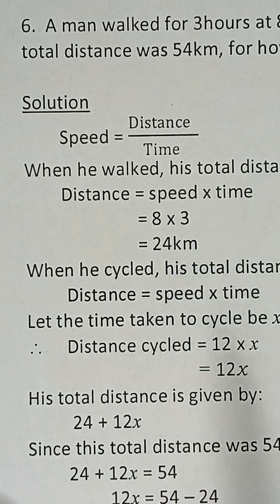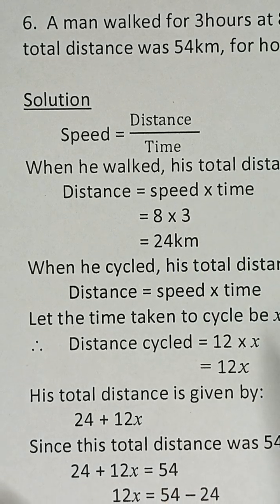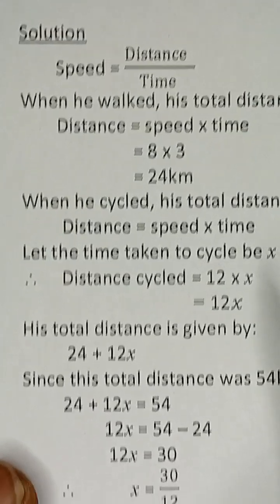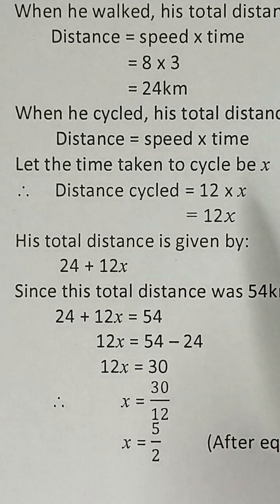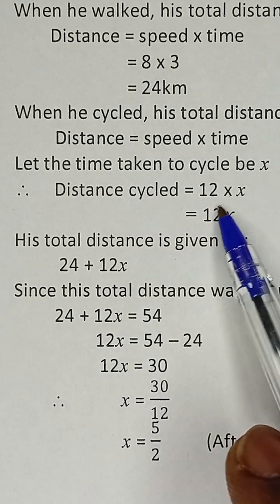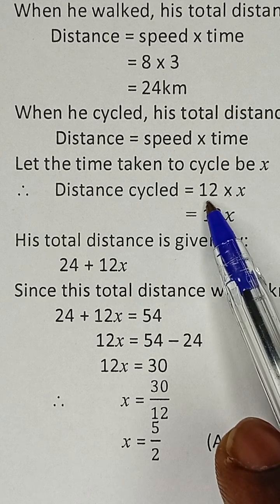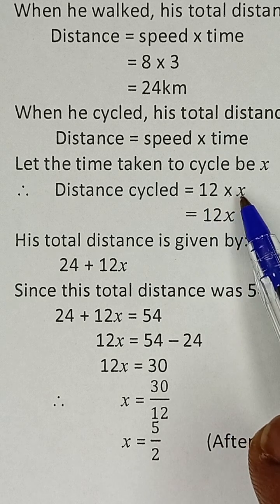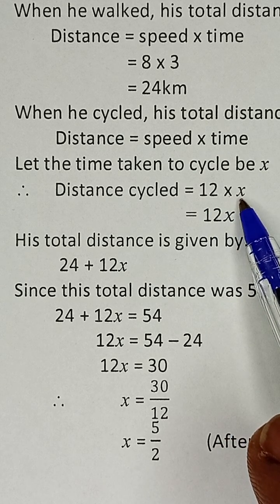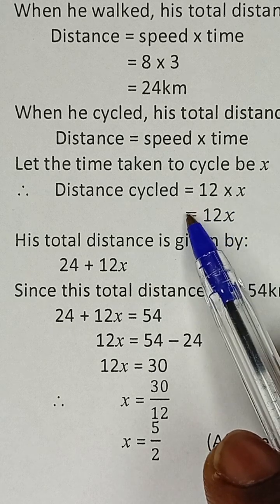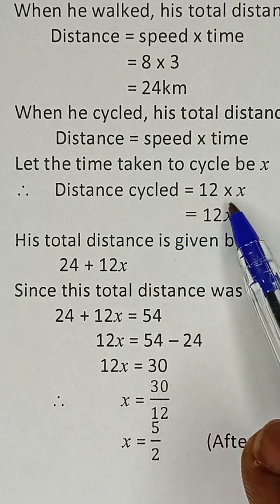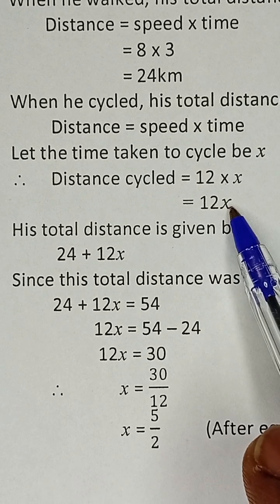Now if the time he spent cycling is x, then we can say that distance cycled is 12 multiplied by x, because his cycling speed was 12 and the time it took was x. So distance cycled is 12x.